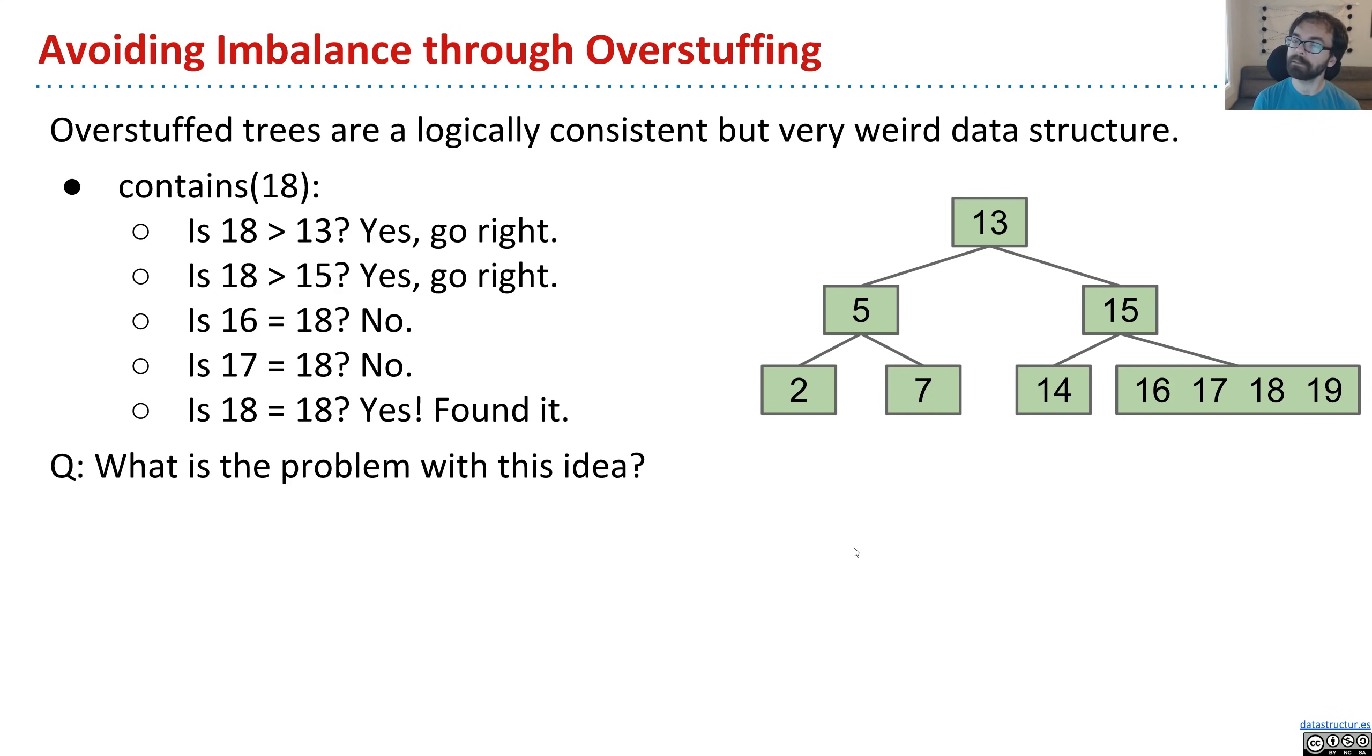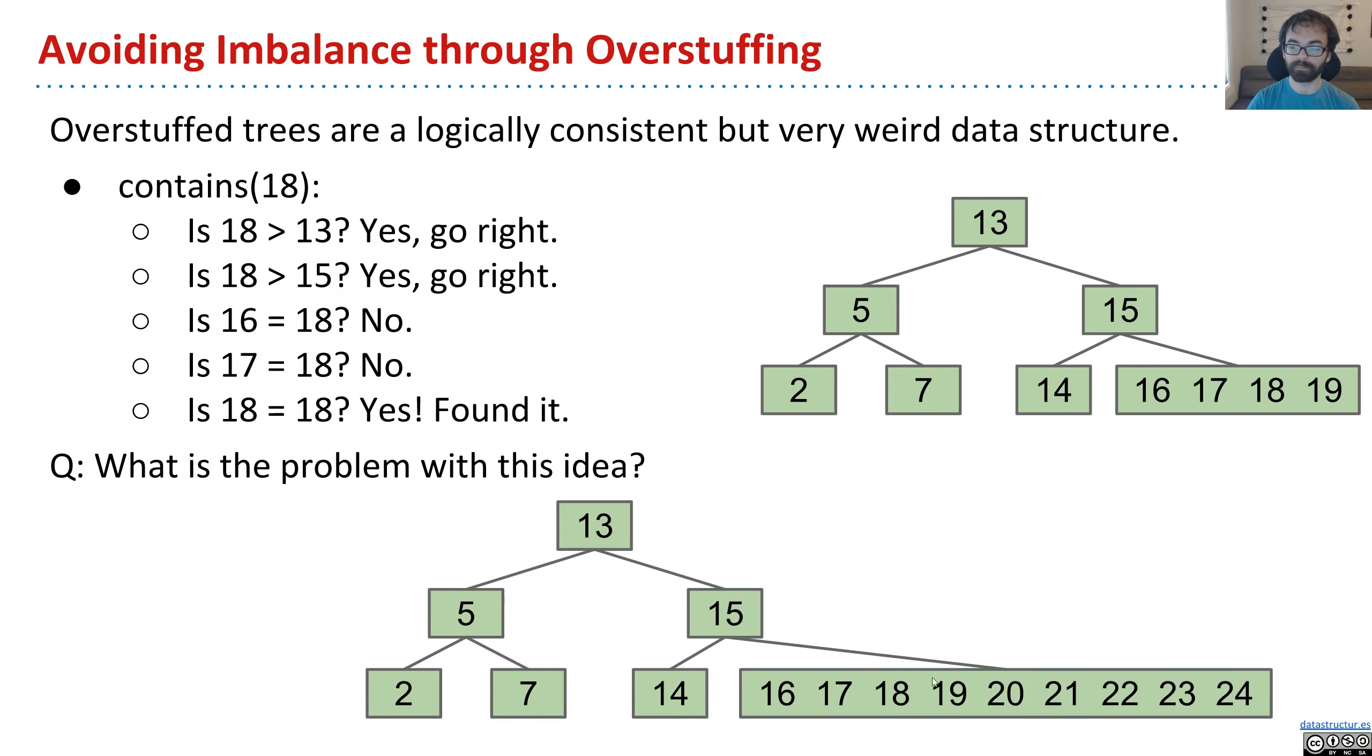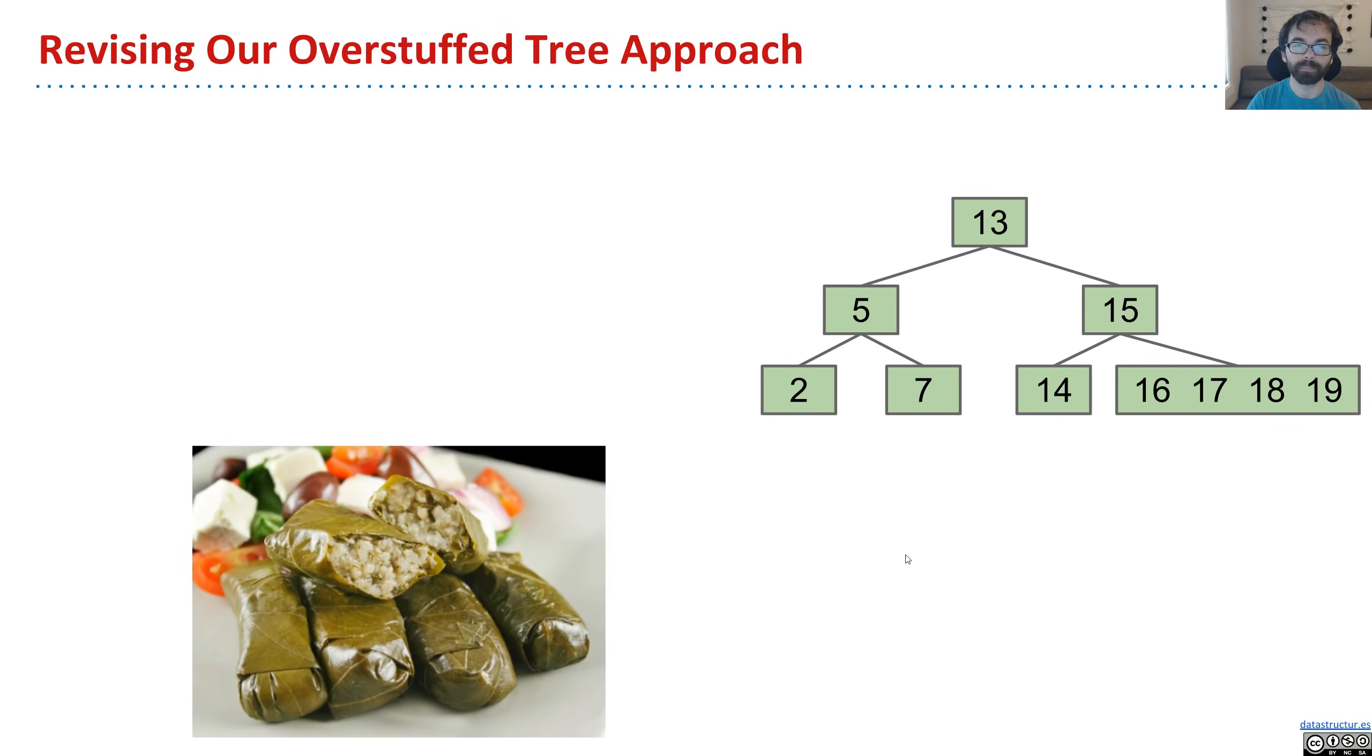But the problem with this idea, the problem is that eventually you end up with maybe a leaf node that just has a big old list in it. And again, you basically just degenerated to a linked list. So what do we want to do to make things even better?